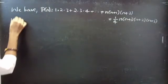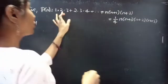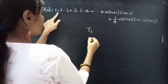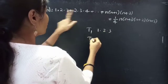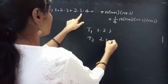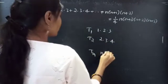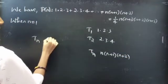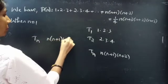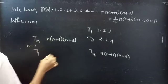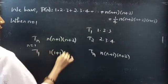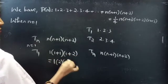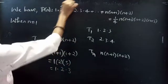When n equals 1, the first term t1 is 1·2·3, the second term t2 is 2·3·4, and the nth term is n(n+1)(n+2). When you put n equals 1, you get t1 equals 1·(1+1)·(1+2) equals 1·2·3, which is the first term.